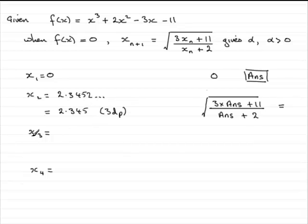To get the third approximation, all you need to do is press equals again. And if you do that, what you should get is 2.0373 and so on. Rounding that to three decimal places is 2.037.